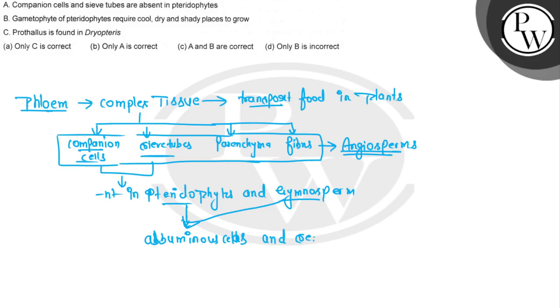In pteridophytes, sieve cells, not sieve tubes, are present for conduction of food. So the first option is right - companion cells and sieve tubes are absent in pteridophytes.